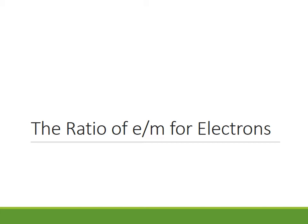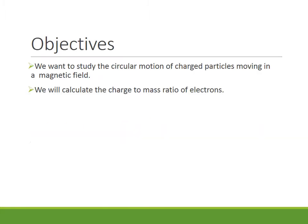The ratio of charge to mass for electrons. Our objective is to study the circular motion of electrons moving in a magnetic field. We will also calculate the charge to mass ratio of electrons because of this observed circular motion.